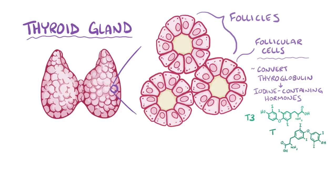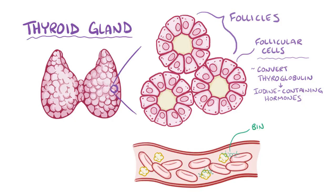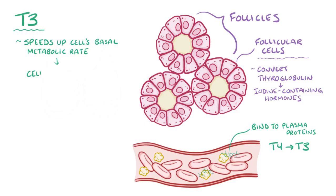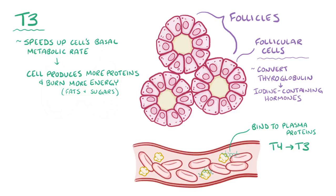Once released from the thyroid gland, these hormones enter the blood and bind to circulating plasma proteins. Only a small amount of T3 and T4 will travel unbound in the blood, and these hormones get picked up by nearly every cell in the body. Once inside the cell, T4 is mostly converted to T3, at which point it can exert its effect. T3 speeds up the basal metabolic rate — cells might produce more proteins and burn up more energy in the form of sugars and fats.